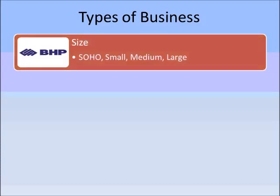The first way we distinguish between different types of businesses is based on their size. There are traditionally three types of business: small, medium, and large. But over the last few years we've added what we call the SOHO business, which stands for small office, home office business. This is typically people who set up a business in their own home, running things with a web presence or online business or basic consulting that doesn't require a premises to operate out of, and typically has no more than two or three employees, if any at all. The vast majority of SOHO businesses don't have any employees.